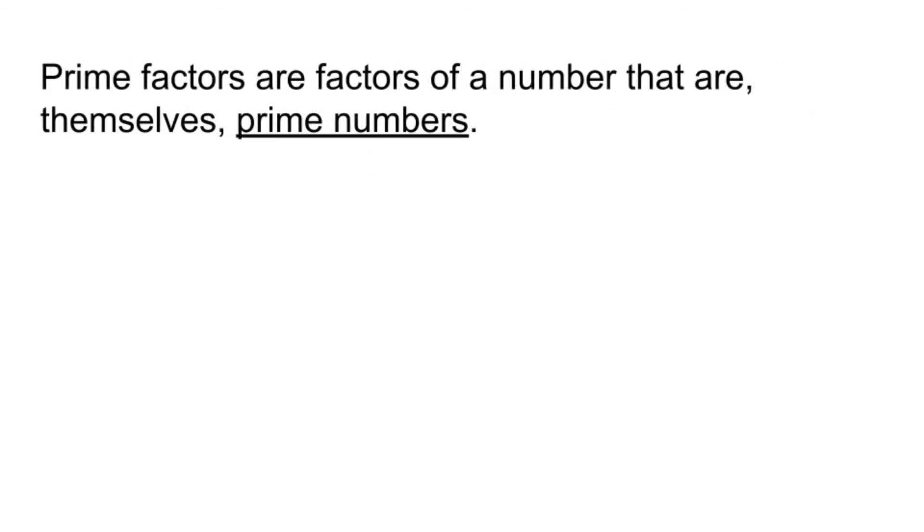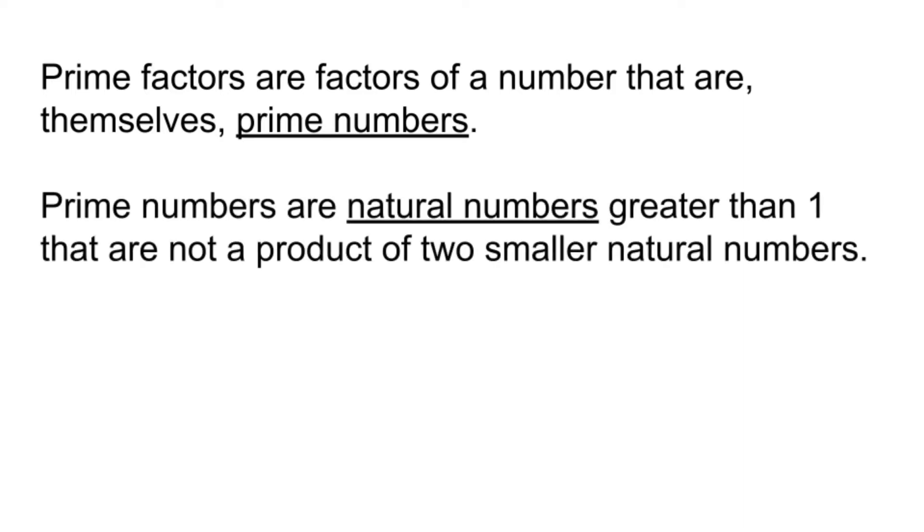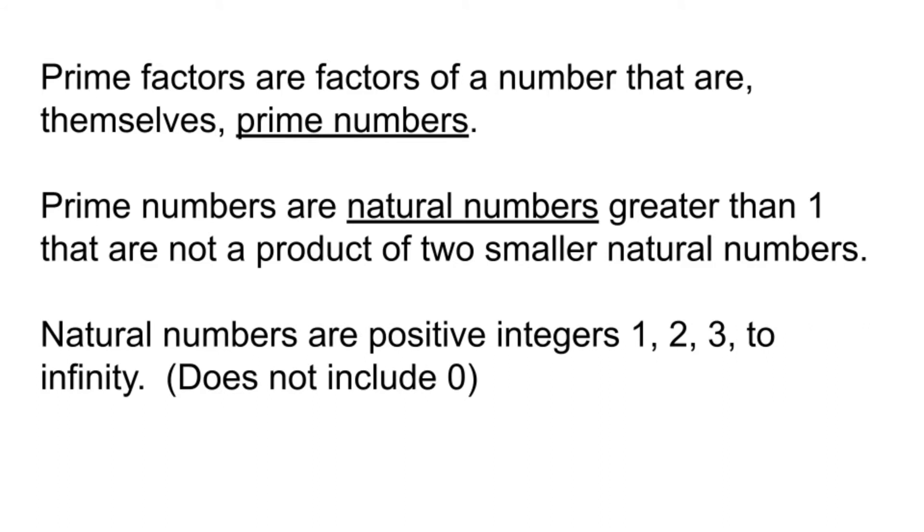Prime factors are factors of a number that are themselves prime numbers. Sounds kind of confusing, so what exactly are prime numbers? Prime numbers are natural numbers greater than 1 that are not a product of two smaller natural numbers. Still confused? What exactly are natural numbers? Natural numbers are positive integers 1, 2, 3 to infinity, but does not include 0.